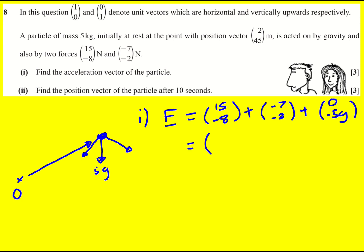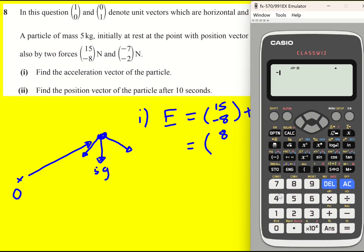We can add these together, so 15 plus -7 is going to give 8, and then it's going to be -10 minus 5 times 9.8, which is -59.